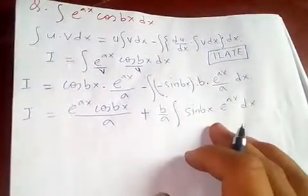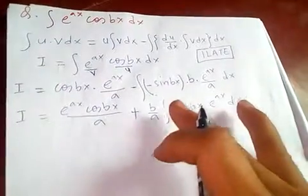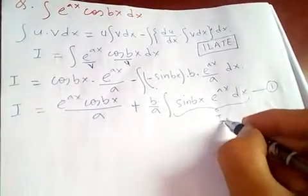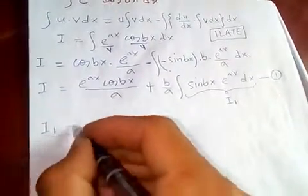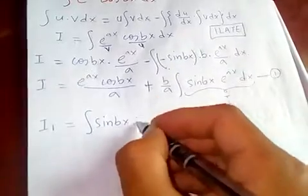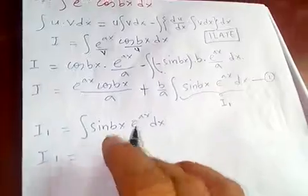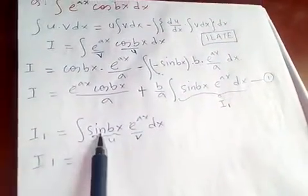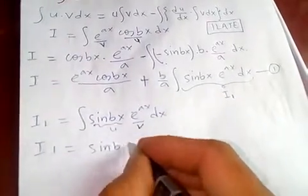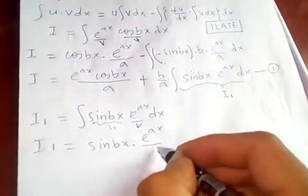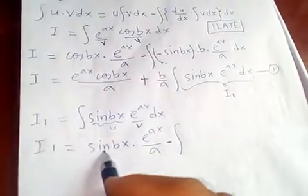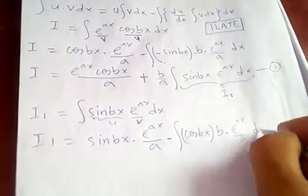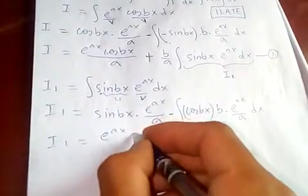We call this equation one, and we set I₁ equals the integral of sin bx times e to the ax dx. Applying IBP again — sin bx is still the first function by ILATE: first function times integral of second function gives e to the ax over a, minus the integral of the derivative of sin bx, which is b·cos bx, times e to the ax over a dx.